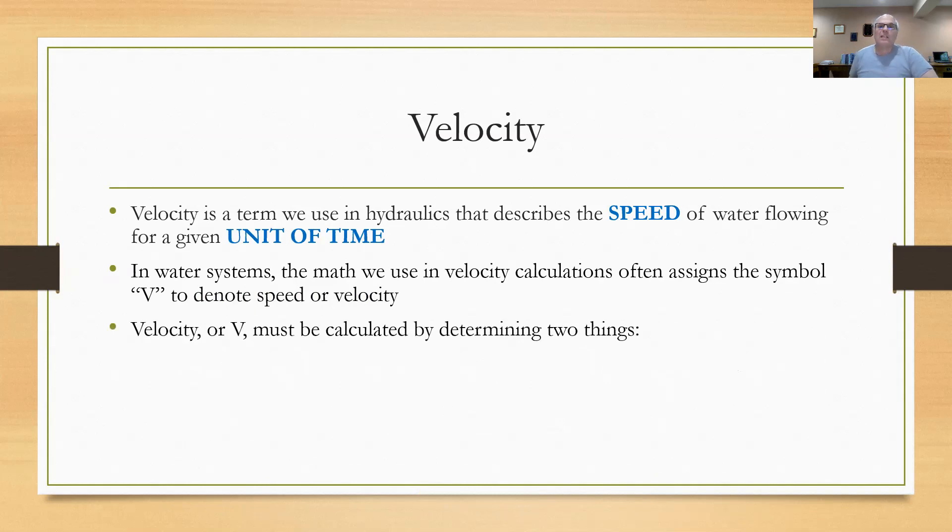So there's two entities there: the speed that the volume of water is flowing, and the amount of time that it's doing that speed over. We got to work those two things out. Now in the water system math, when we get a velocity problem, they often just denote the letter V for speed or velocity. So when you see capital V, it's not volume, it is velocity. V must be calculated by determining two things.